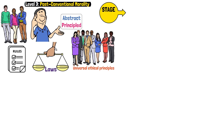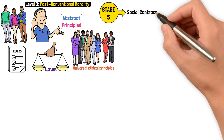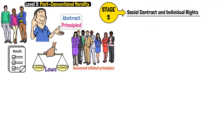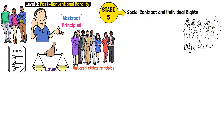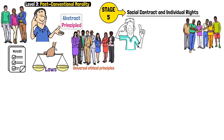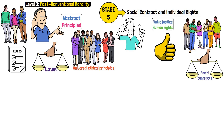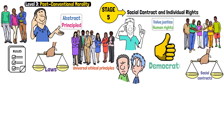Stage 5 – Social Contract and Individual Rights. People at this stage understand laws as social contracts designed for the greater good, but they also recognize that laws can be flawed. They value justice and human rights and see morality as upholding democratic principles.